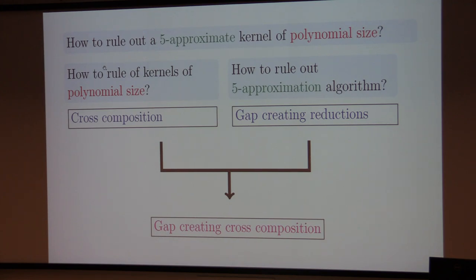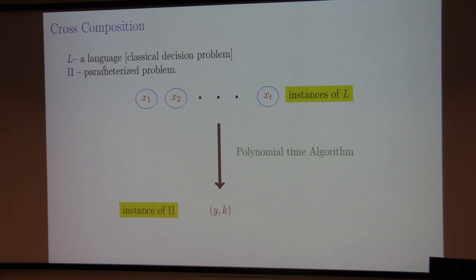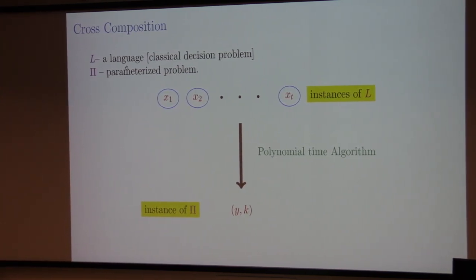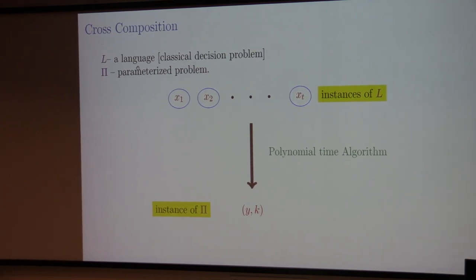We'll see some examples — it will be clear when I explain them. Just a quick recap of what cross-composition is, in case somebody is new to it. We're going only for lower bounds, and most of the examples are from the paper on lossy kernelization.